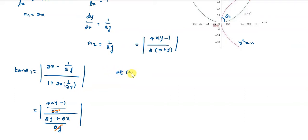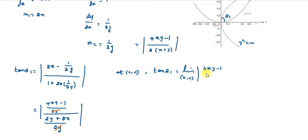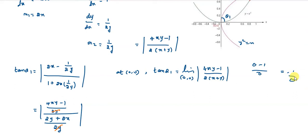At the point (0,0), substituting into the formula: tan theta 1 equals the modulus of 4(0)(0) minus 1, divided by 2 into (0 plus 0). The numerator gives 0 minus 1 and the denominator gives 0, so the result is indeterminate, giving tan theta 1 equal to 0 at the origin.